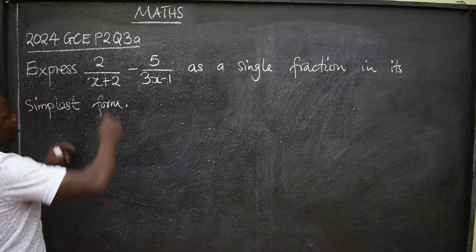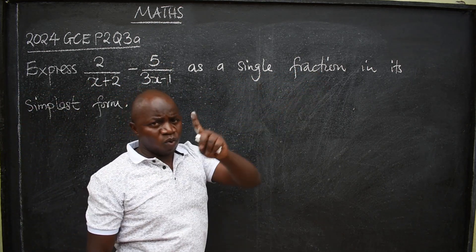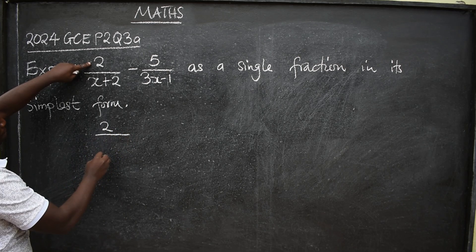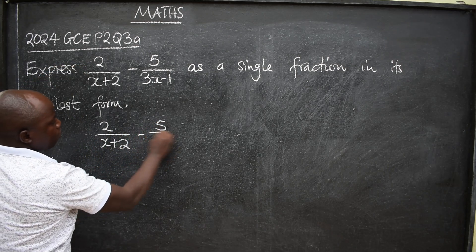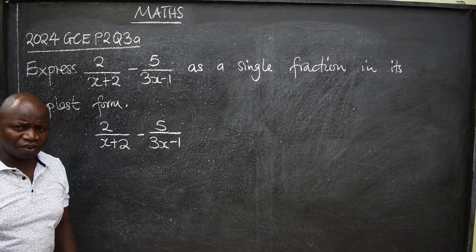Now you've been given two fractions here. They want the fraction to be single, one fraction. So we have 2 over x plus 2 minus 5 over 3x minus 1 as a single fraction.